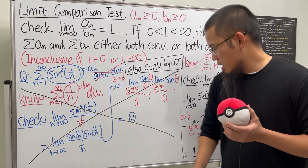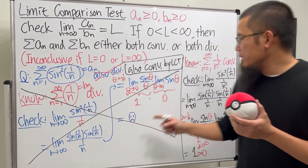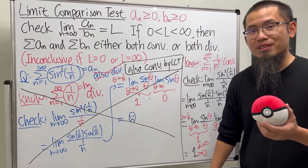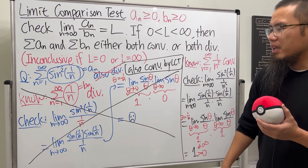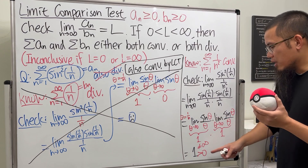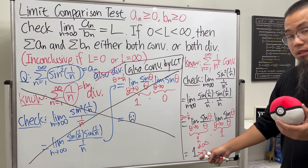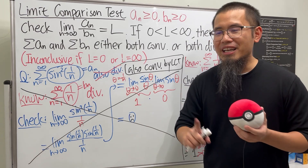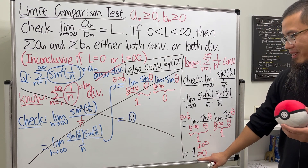The key idea: when the limit of aₙ/bₙ equals one, it means aₙ and bₙ are approximately the same size as n goes to infinity. If they are finite multiples of each other, their convergence behavior must match — that's why we can draw a conclusion when L is a finite nonzero value. However, note that for the ratio test, L equal to one does not allow any conclusion. That's the opposite situation — L equals one is good for the limit comparison test but not for the ratio test.